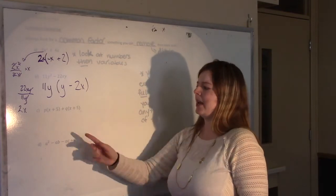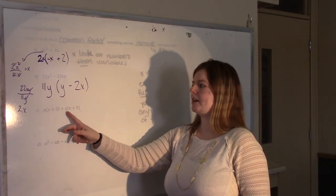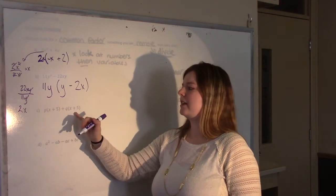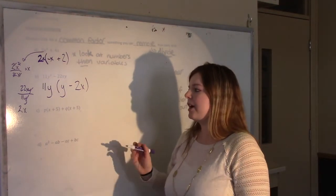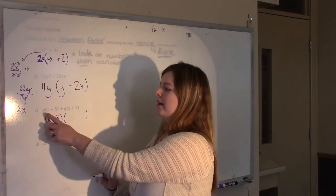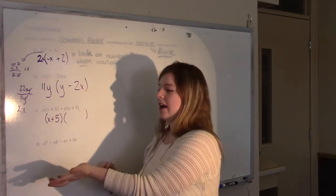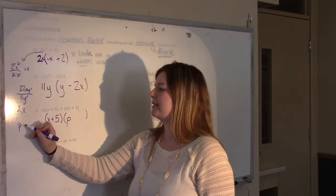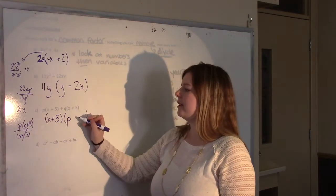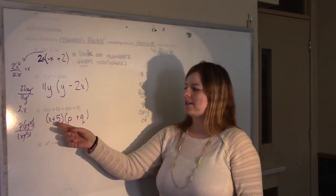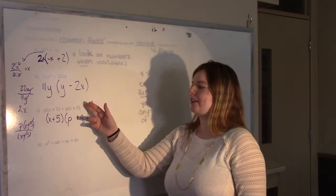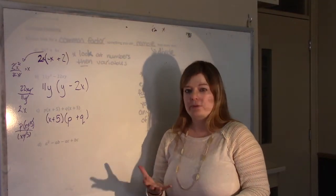This is a slightly different situation: we have a monomial times a binomial plus a monomial times a binomial — p(x + 5) + q(x + 5). What's common is (x + 5); they both have that term. So you can factor out the whole (x + 5). What's left: p(x + 5) divided by (x + 5) leaves p, and similarly you're just left with q. So the final factored form is (x + 5)(p + q). To verify, you'd foil both forms and confirm the expansions match.